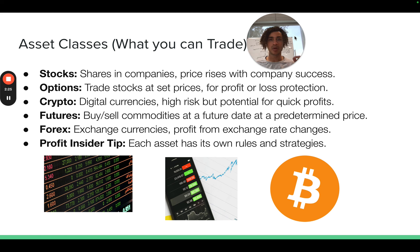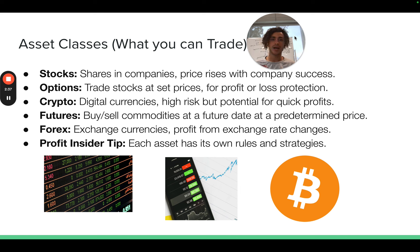A put option is betting that the price will go down. You buy a put option when you think the price will go down, and it works the same way as a call option except you profit when the price goes down. So: call options when price goes up, put options when you think the price is going to go down. Those are the different kinds of options we trade.